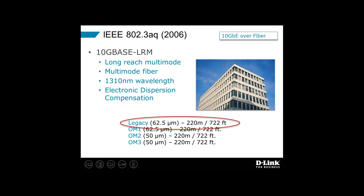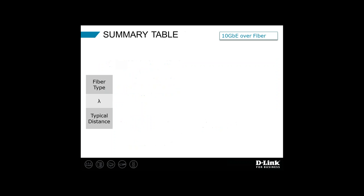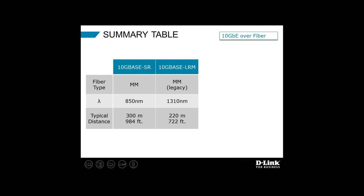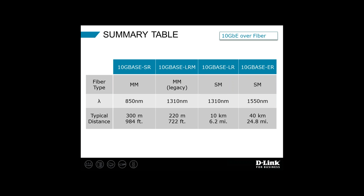Here's a summary table for reference: 10GBase-SR is multimode, 300 meters over OM3 and 400 meters over OM4, using the 850 nanometer wavelength. 10GBase-LRM is for older multimode fiber, wavelength of 1310 nm, giving 220 meters (722 feet). 10GBase-LR is on single mode at 10 kilometers, and 10GBase-ER is on single mode at 40 kilometers.